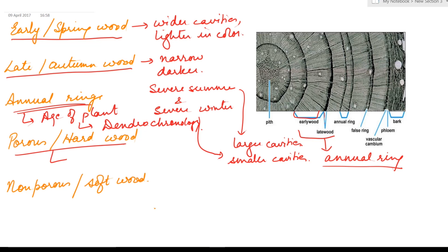Wood made up of vessels is known as porous wood or hardwood, and wood made up of tracheids is known as non-porous wood or softwood. Now in case of plants where annual rings are seen, the wood is known as ring porous wood.